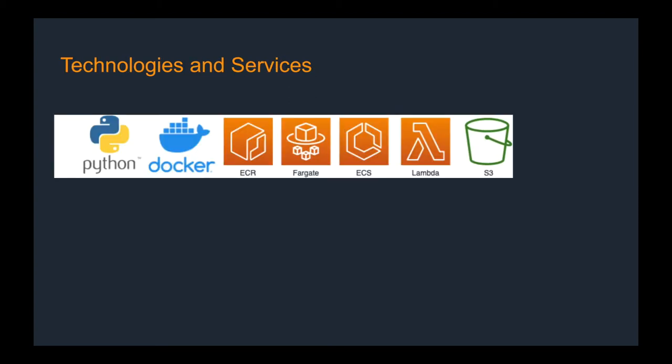To implement this, we will use the following technologies and services. Python will be used to write the code responsible for converting the movie from RGB to grayscale. Docker will be used to create a blueprint of the processing instance. This blueprint will get stored on the Elastic Container Registry, ECR. Then the Elastic Container Service will be used in conjunction with Fargate to manage, scale, and deploy the processing containers.